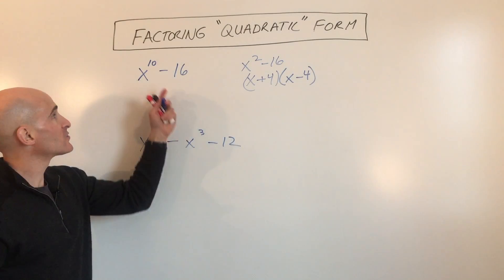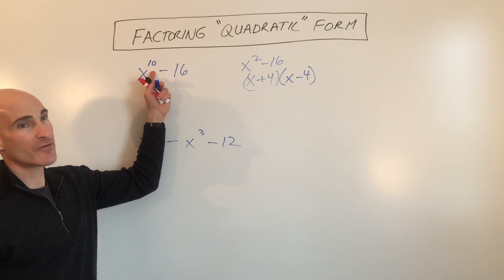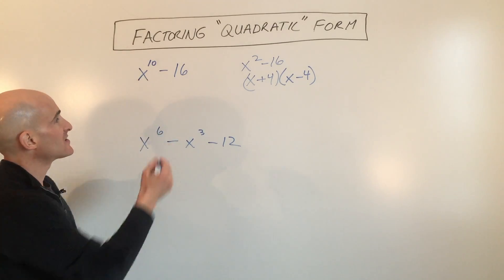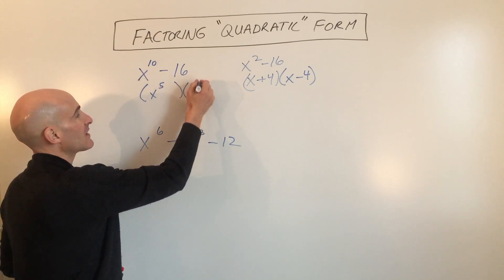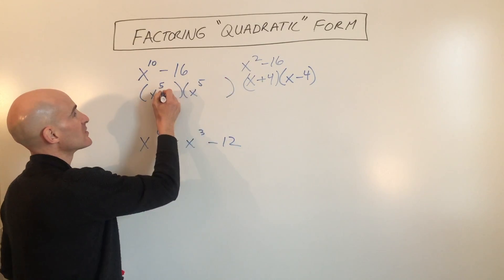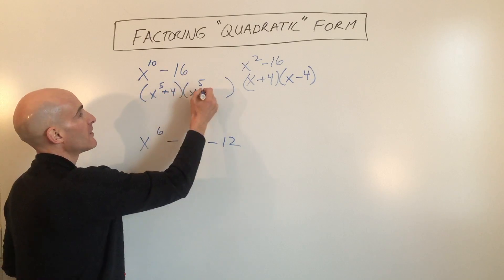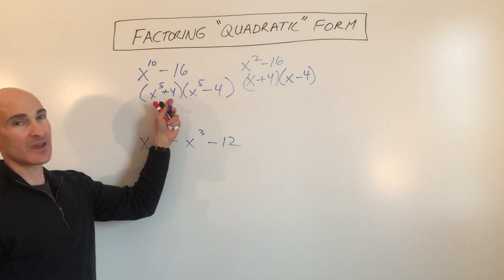The only difference here is we have x to the 10th power. So how do we factor that? Well, it's going to be the same idea. It's going to be x to the 5th times x to the 5th. And this is going to be plus 4 minus 4.